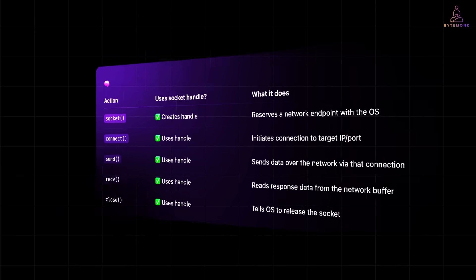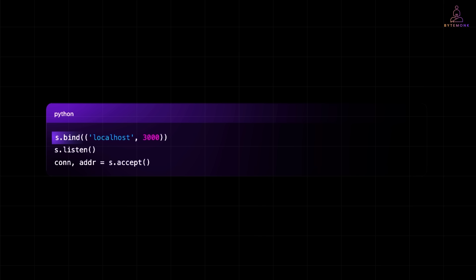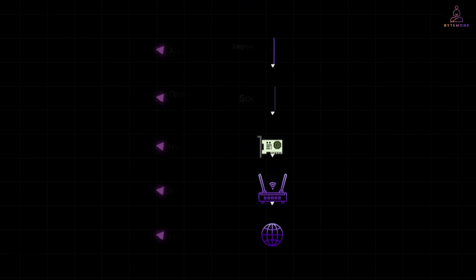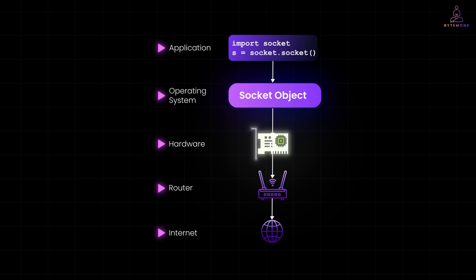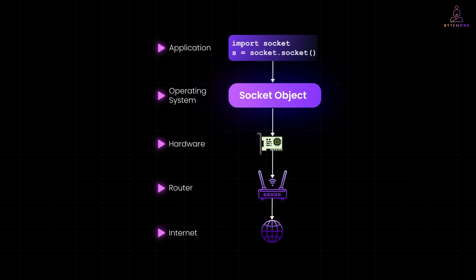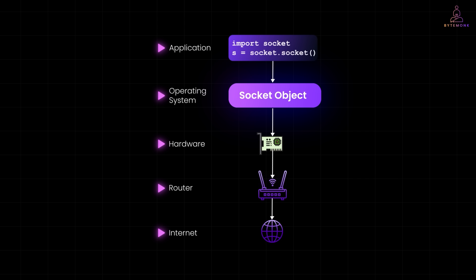And if you are the server, you write this. Here, the OS binds your program to a port and starts watching for incoming connections. When someone knocks on the door, it hands you a new socket already connected to the client. Even though you are dealing with a software object, the data physically travels through your computer's network interface card, or NIC, then to your router, and then out to the internet. You don't have to deal with that — the OS abstracts all that away. Your code just talks to the socket object, the socket talks to the network stack, the stack talks to the hardware, and poof — you are connected.